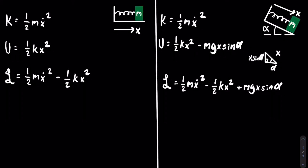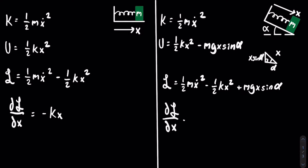We start by taking the partial of the Lagrangian with respect to x. Using the power rule, this is equal to negative k x for the first system. The partial of the Lagrangian with respect to x for the second mass-spring system will be equal to negative k x plus m g sine of alpha.